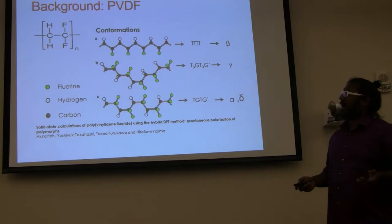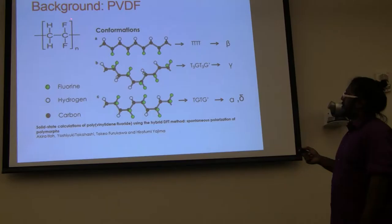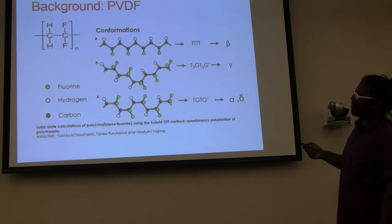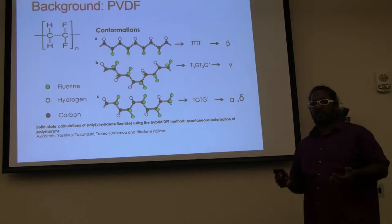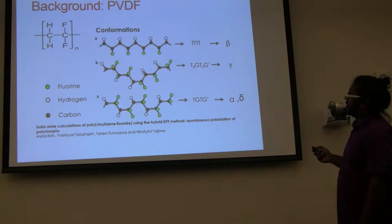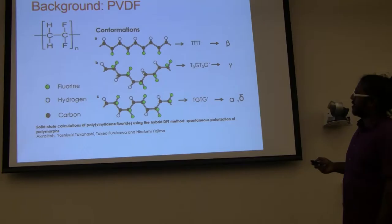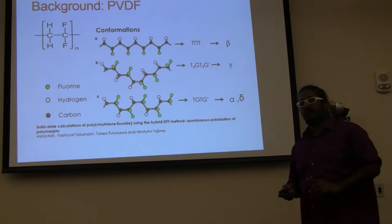So depending on how this polymer stacks itself, we can either get a net polarization on the macroscopic scale or not. There's three different ways that the chains will orient themselves. The first way, we call this the all-trans conformation or the beta phase. When these pack together, there's a macroscopic polarization, so this is ferroelectric. This is the gamma phase. It's three trans bonds and then we have one gauche bond here. This phase also, when it packs together, has a net dipole moment and is ferroelectric.